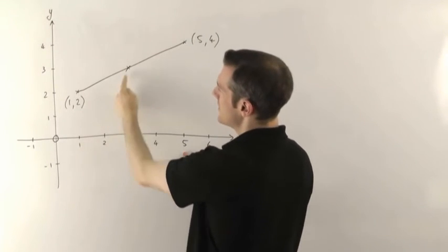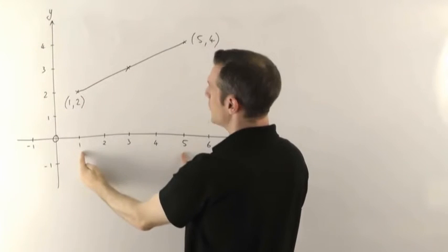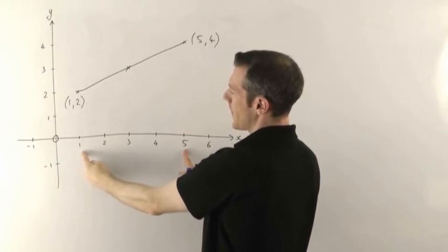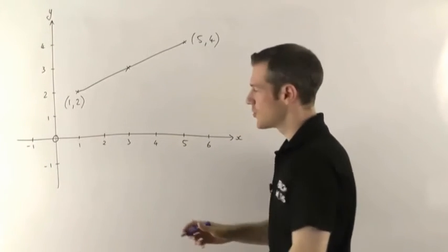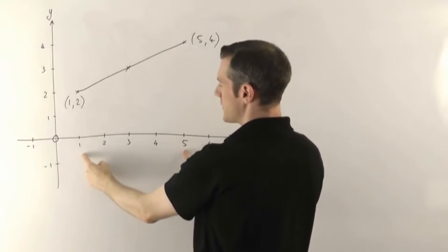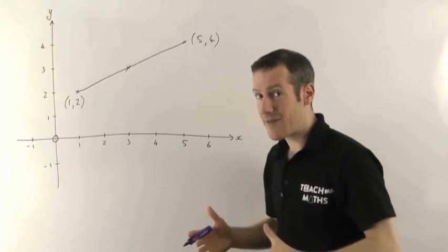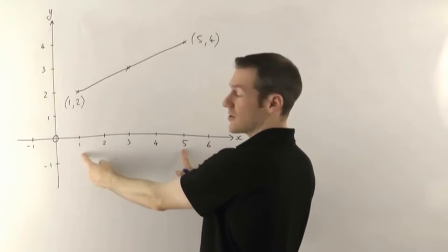So the x coordinate here is going to be halfway between 1 and 5. Now to cut a long story short, to find the number that's halfway between these two you want the average of these two x coordinates.